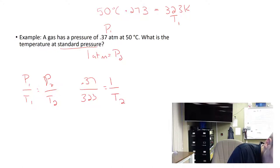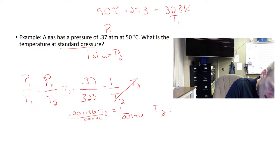I'm going to cross multiply my T2 to both sides, so that this T2 drops out. It'll give me 0.001146 times T2 equals 1, and then I'll divide both sides by my decimal here, and that'll give me what T2 is. T2 is 872 Kelvin.